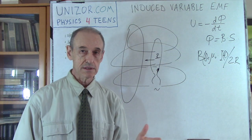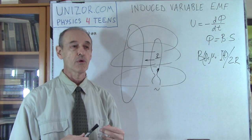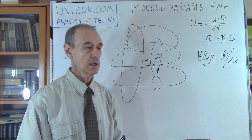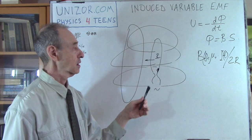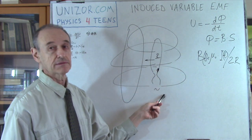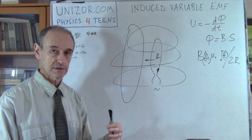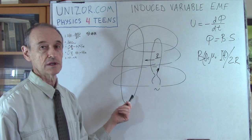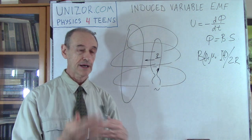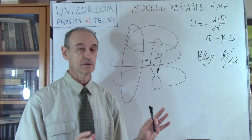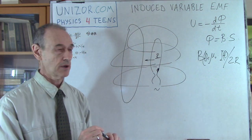This is the theoretical basis for transformers. We have basically two loops: one with some kind of voltage applied, and another with inducted electricity generated in it. Now we can actually change the voltage using a certain technique which I'm going to discuss right now.